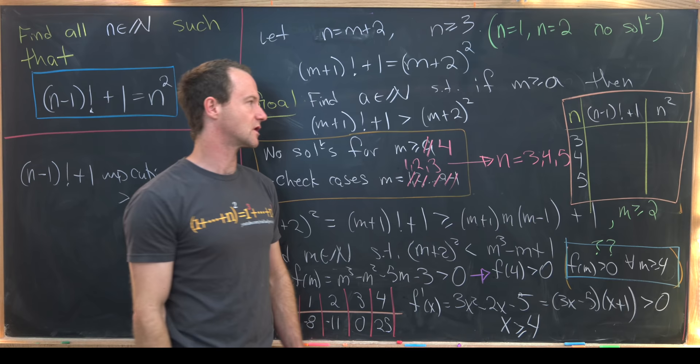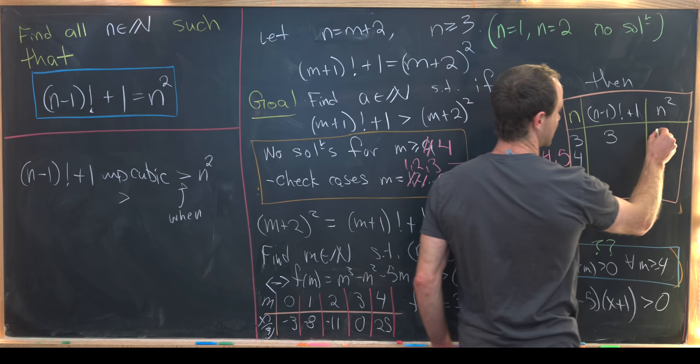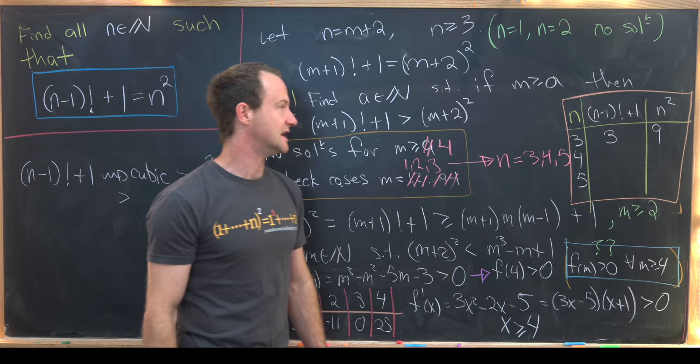So notice if n equals 3 we get 3 minus 1 factorial. Well that's 2 factorial which is 2 plus 1 is 3. Well 3 isn't a perfect square and it's most definitely not 3 squared which is 9 so there's no solution there.